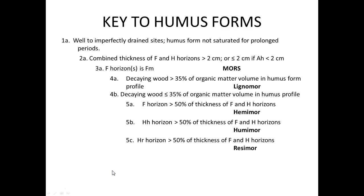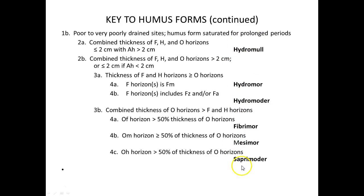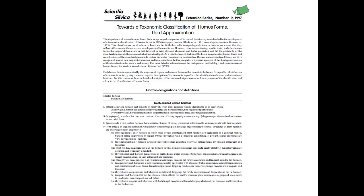There are several different keys you'll use in lab. Here's an example of a key covering mors, moders, mulls, and their variations — it walks you through each one during your assessment. There's also a key created by a student in 2010, which has two slides. You'll also be given a four-page handout from 1997 by a prominent soil and forest ecologist, with detailed descriptions of all the different horizons.